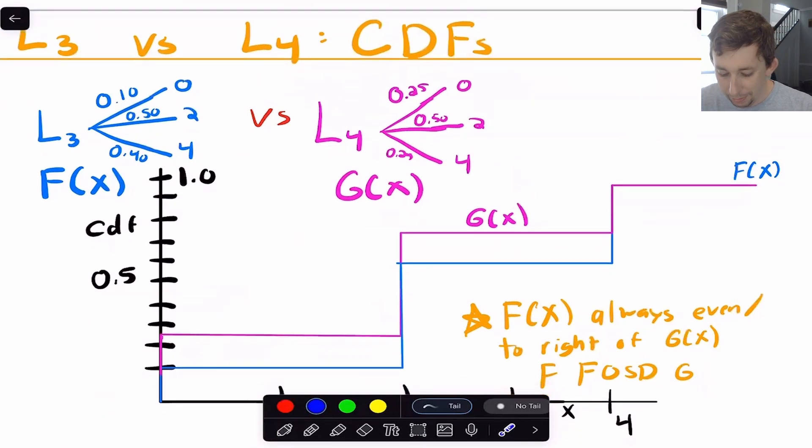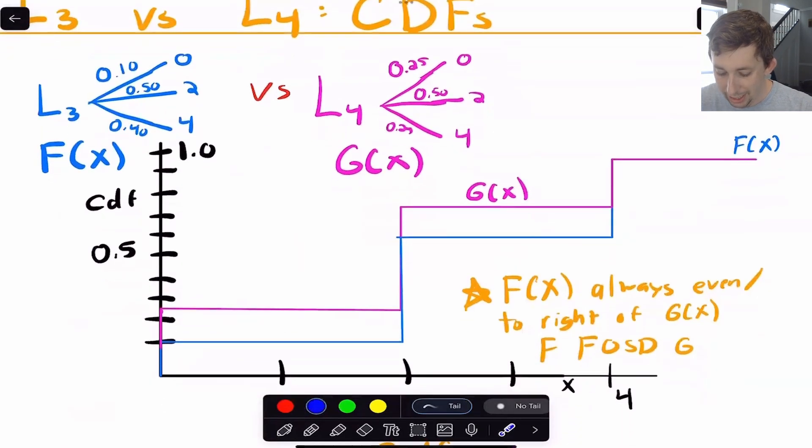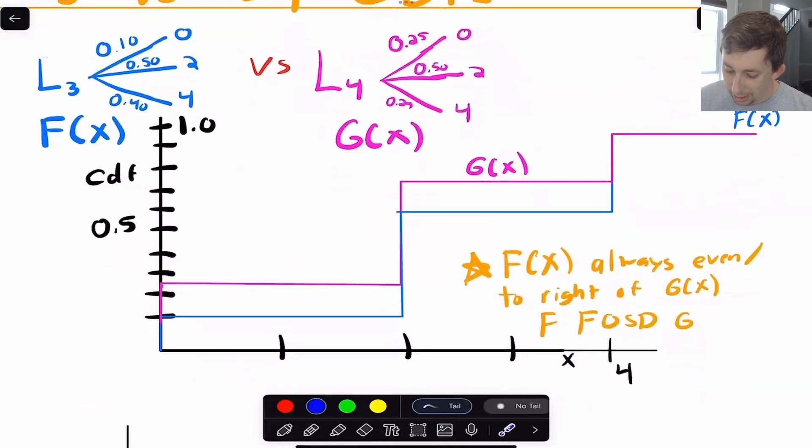So let's just plot L3 and L4 on this CDF, where I'll plot L3 in blue and L4 in pink. So you can see I've got a 10% chance of 0, a 50% chance of 2 for both of them, and then a 40% chance of 4 for L3, and only a 25% chance of 4 for L4. So if I plot these CDFs, you notice that F of X, or the Lottery 3, is always at or to the right of Lottery 4. And that's the basic idea behind FOSD.